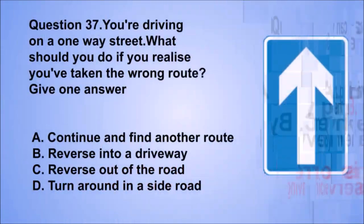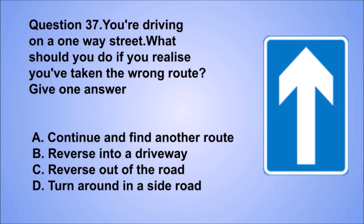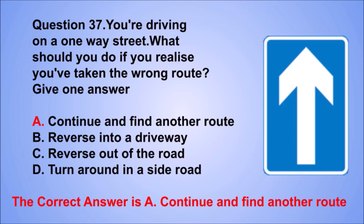Question 37. You're driving on a one-way street. What should you do if you realise you've taken the wrong route? Give one answer. A: Continue and find another route. B: Reverse into a driveway. C: Reverse out of the road. D: Turn around in a side road. The correct answer is A: Continue and find another route.